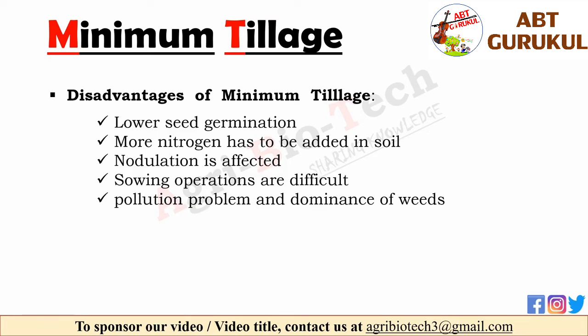Minimum tillage has some disadvantages. First, seed germination is lower with minimum tillage. More nitrogen has to be added as the rate of decomposition of organic matter is low. Nodulation is affected in some leguminous crops like field pea and beans. Sowing operations are difficult with ordinary implements. Continuous use of herbicides causes pollution problems and dominance of perennial problematic weeds.